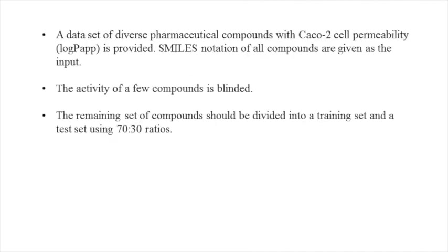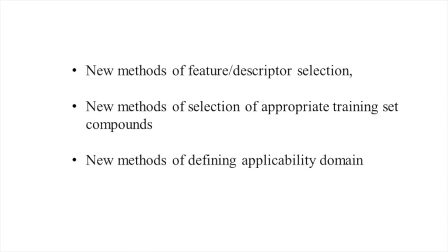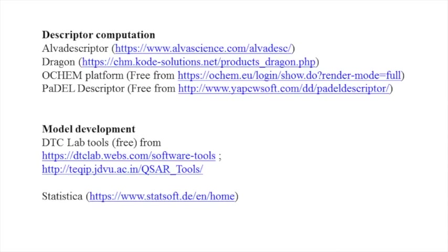One can also innovate with new methods of feature selection, new methods for selection of appropriate training set compounds, and new methods of defining applicability domain. Descriptors can be computed using different tools like Alpha Descriptor, Dragon, Parallel Descriptor, and so on. The model can be generated using DTC Lab tools or some statistical package like Statistica.